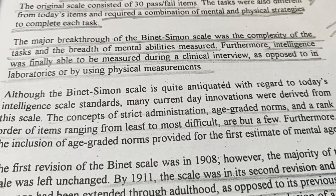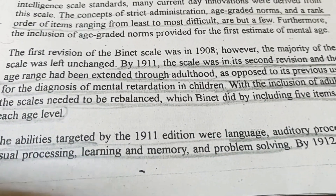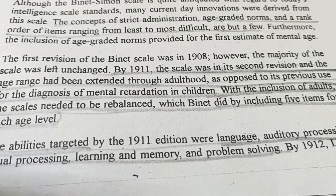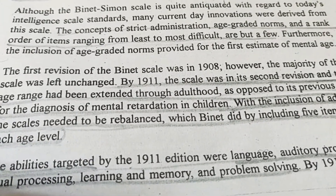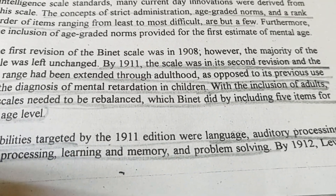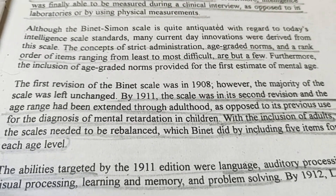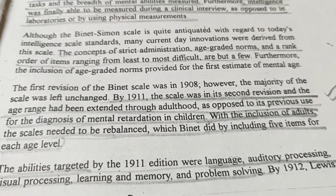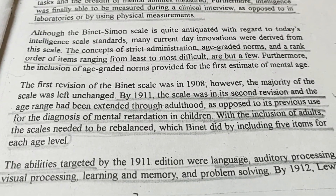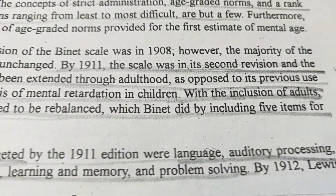Their scale could be checked through clinical interviews rather than physical measurements. A second revision was made in 1911, which was now dependent on age — meaning adults were also included, not just children. They were able to diagnose mental retardation in children and adults. Five items were included for each age group. The 1911 edition tested language, auditory processing, visual processing, learning and memory, and problem solving.